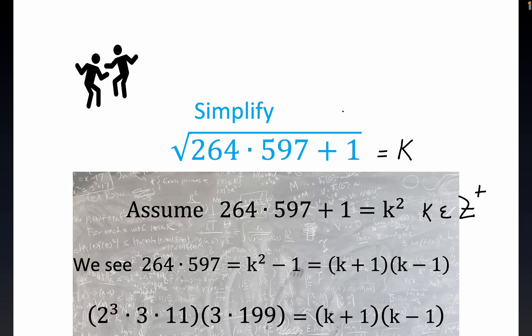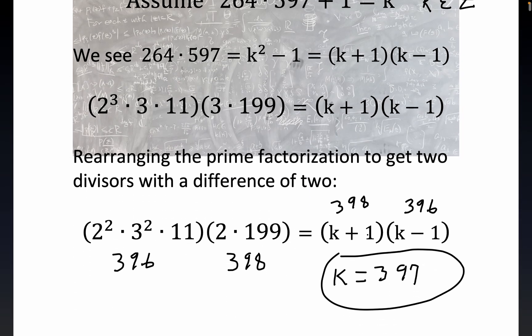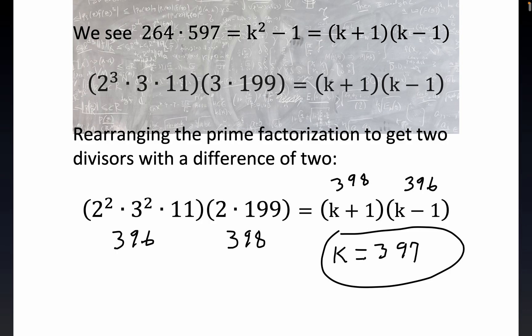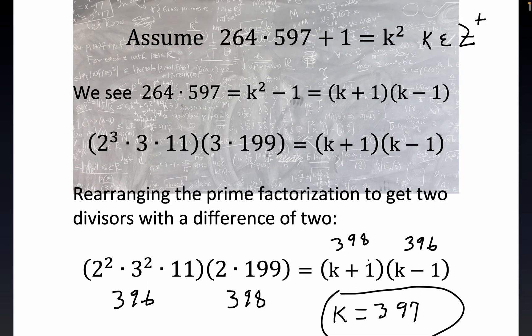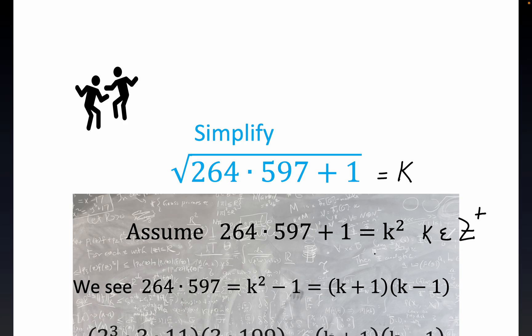But that's provided that this was equal to k squared to begin with. I mean, that the radicand was equal to k squared to begin with. Had it not been, again, we wouldn't have been able to achieve an integer result for k. So the assumption was completely valid. And the solution to the problem is k equal to 397.